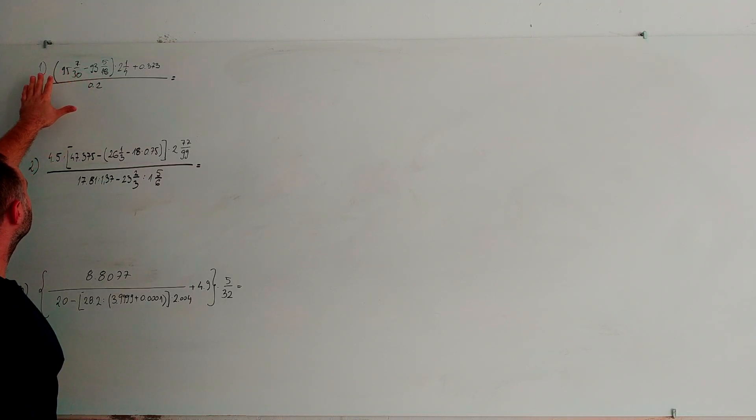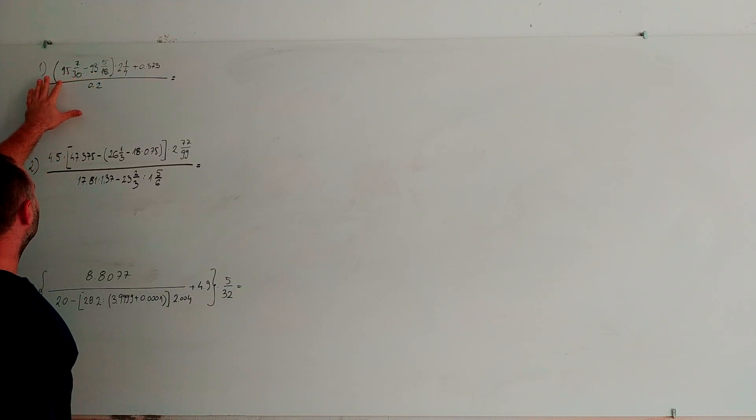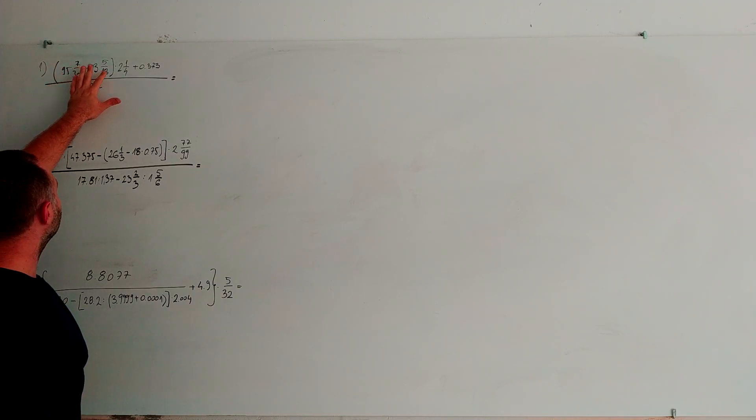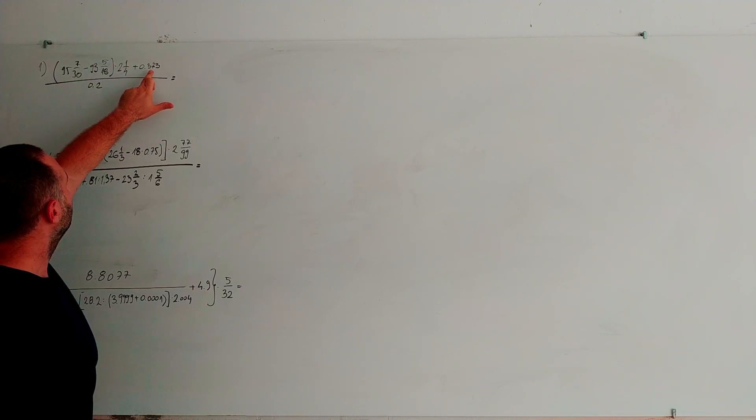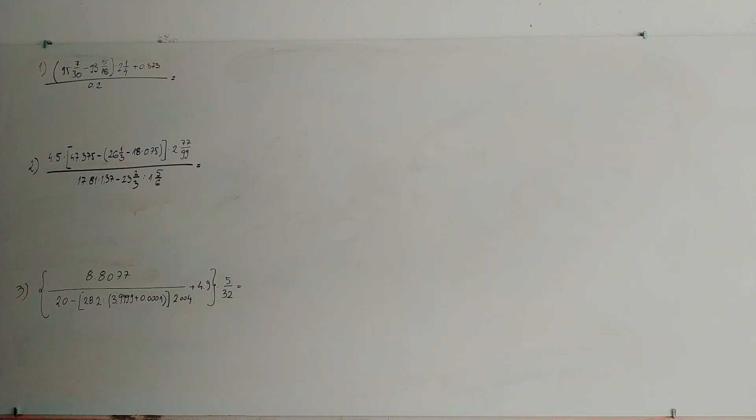Here we have one big fraction. This fraction is very complex. Here are improper fractions, also improper fractions here, decimal numbers here and here. First, what we are going to do is transform these two types of fractions and subtract them.